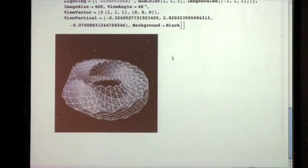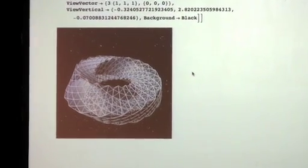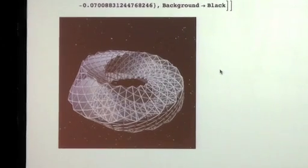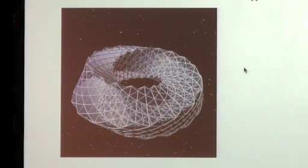And then I added a star field. So it looks like it's out in space. The star field is actually, I just mapped random points with random intensities onto a sphere which surrounds the model.